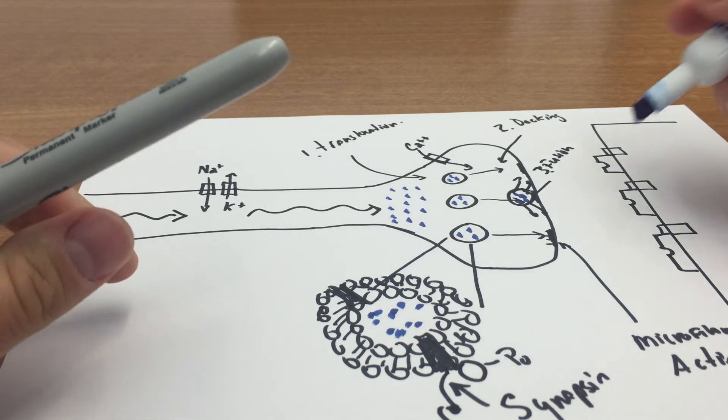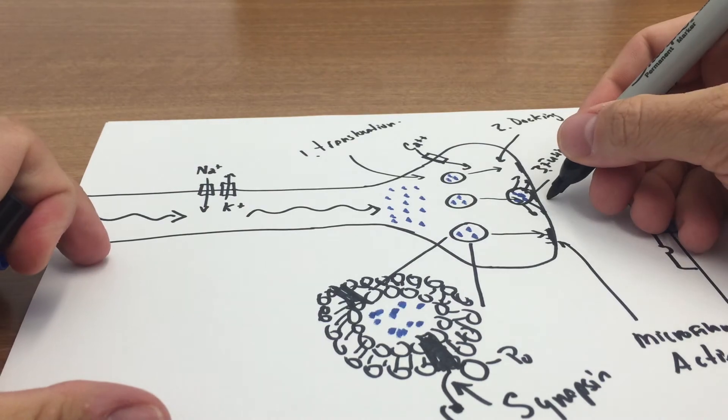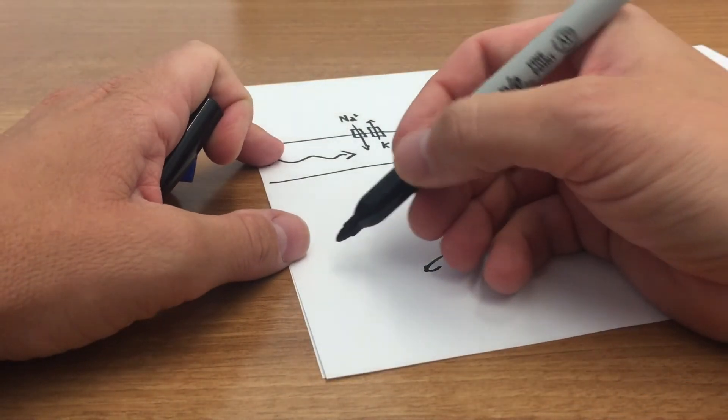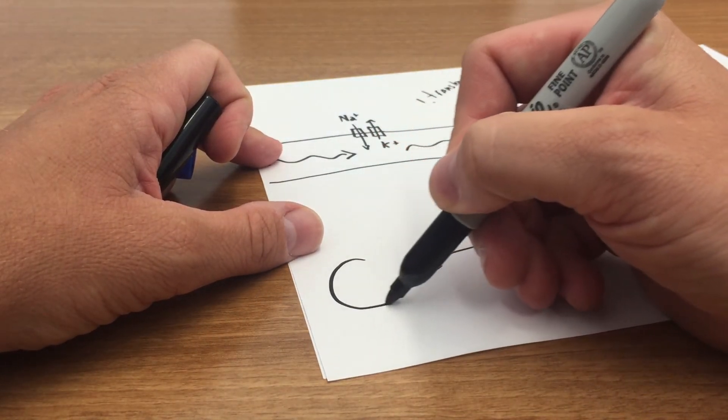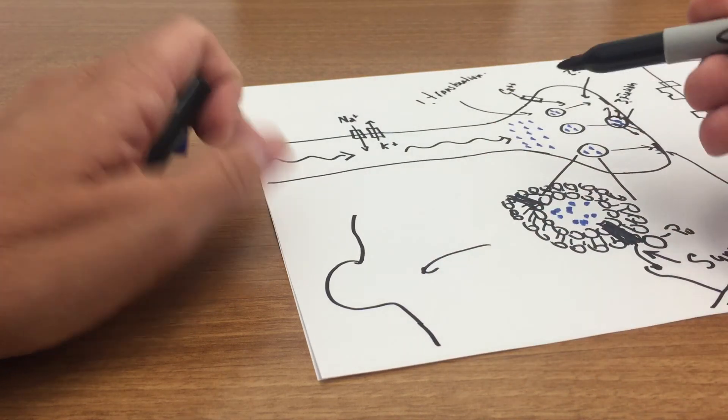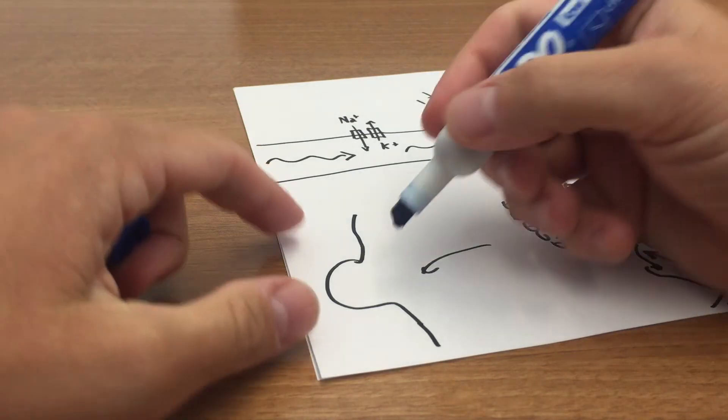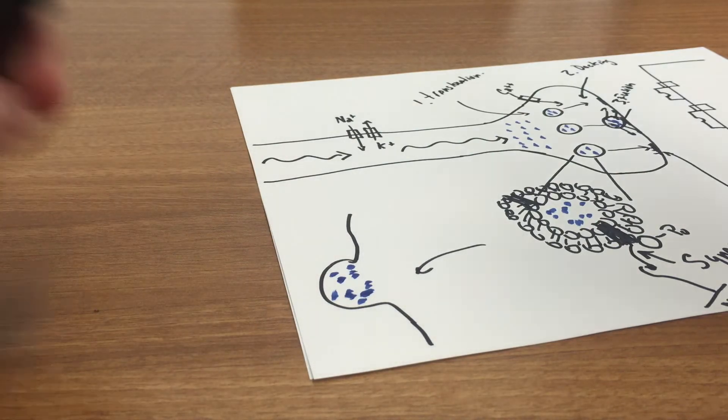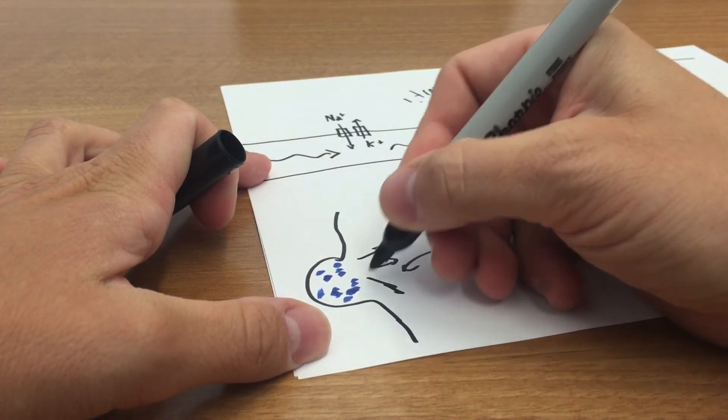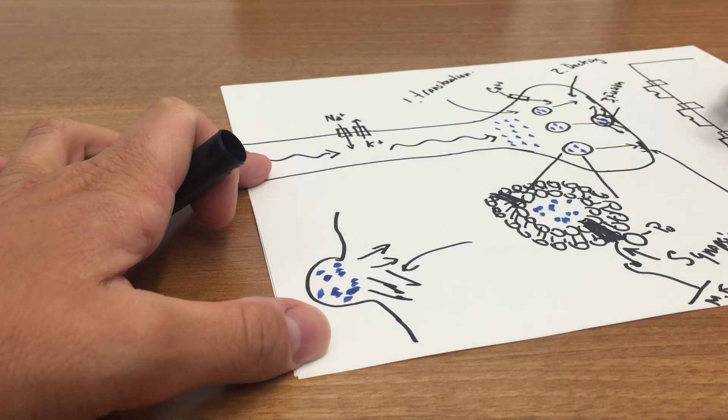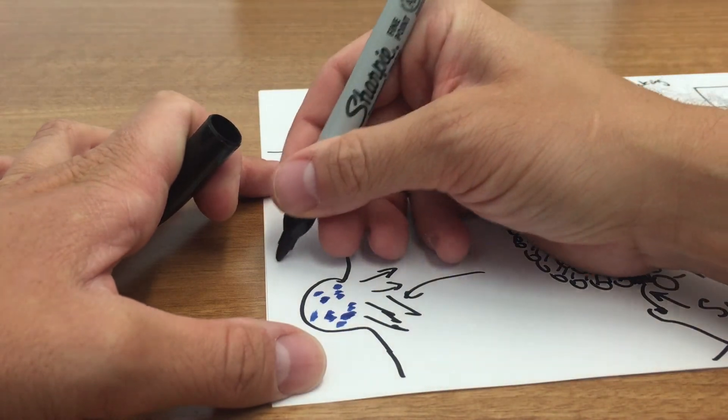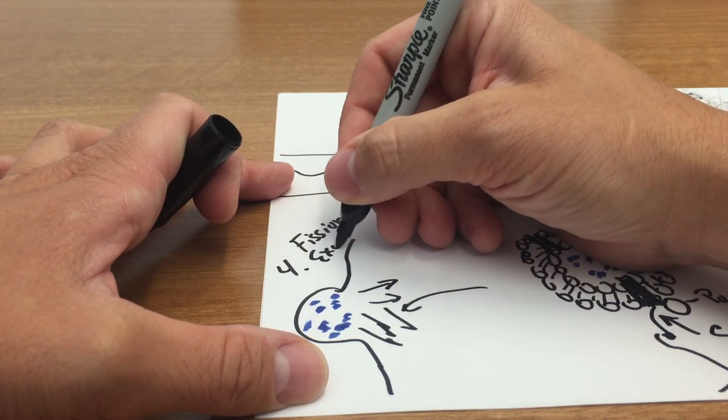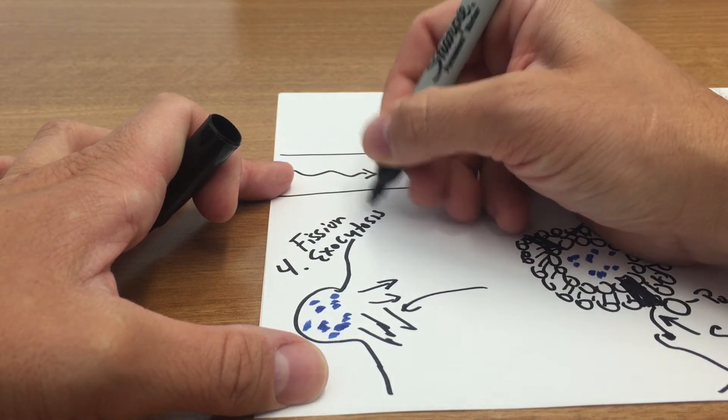Following fusion, we have this dissolving away and this opening up. Maybe I'll draw another picture over here where I have the vesicle fusing the membrane. Following fusion, it dissolves away, it's absorbed, it opens up, releases its neurotransmitter. The neurotransmitter molecules are released, and they're dumped out into the synapse here. Then this is step four, and this is something known as fission exocytosis.